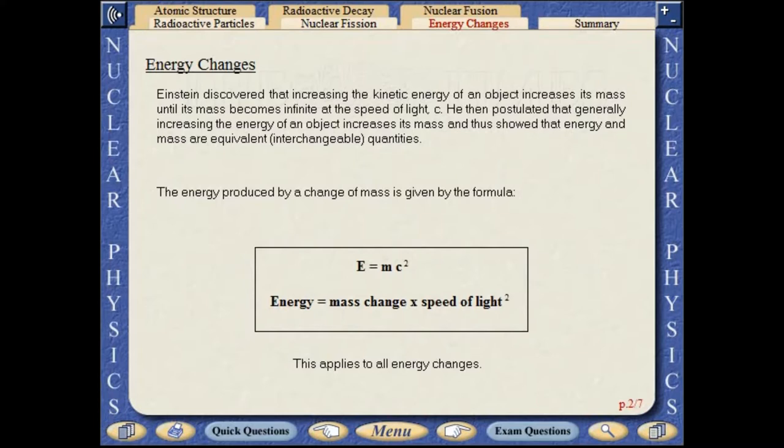The energy produced by a change of mass is given by the formula E equals mc squared. This formula applies to all energy changes.